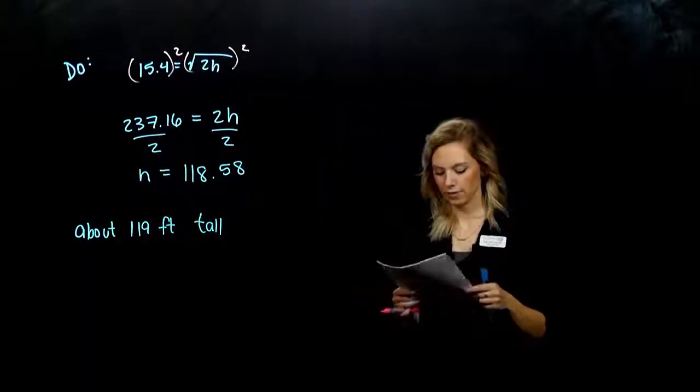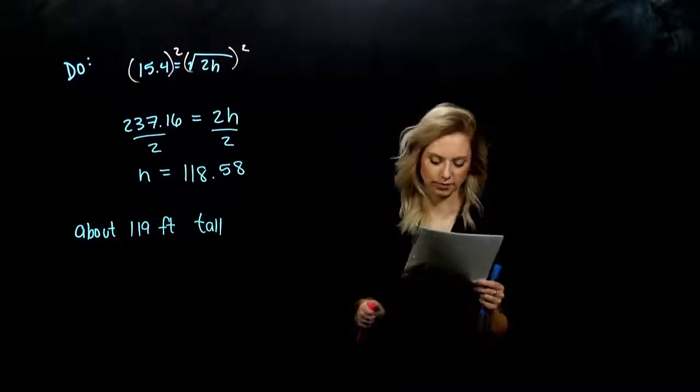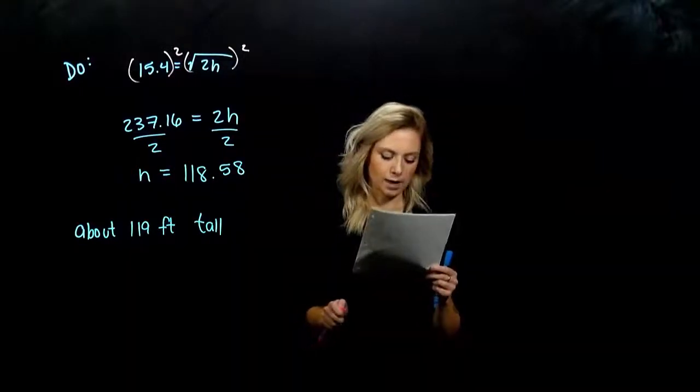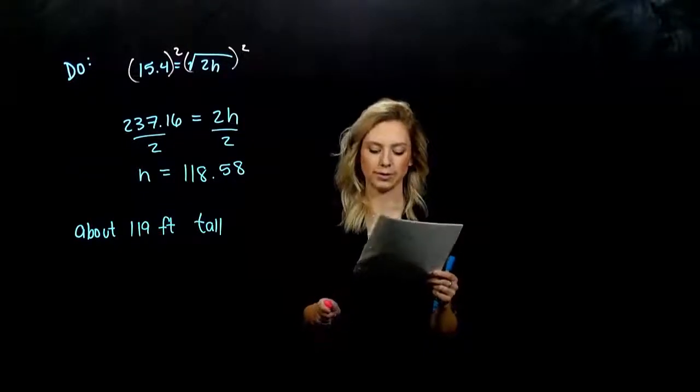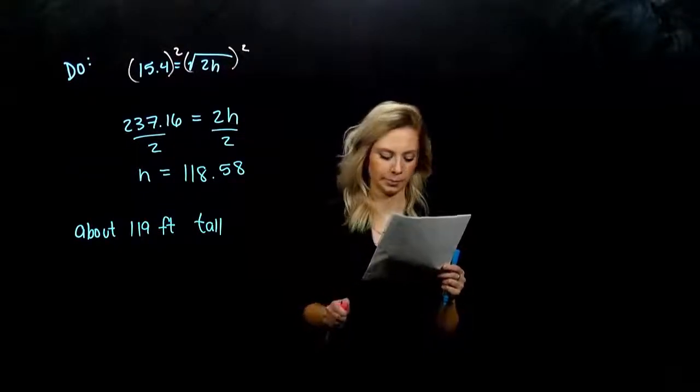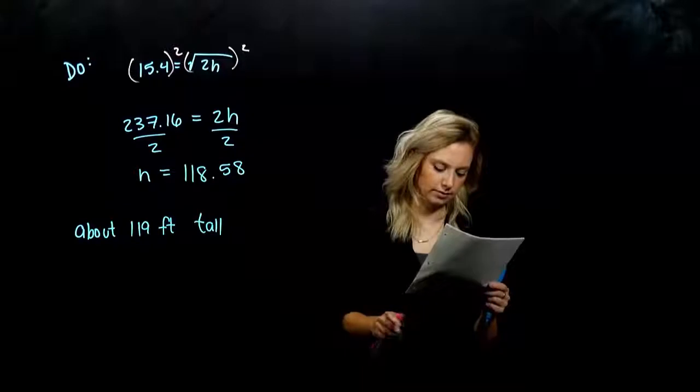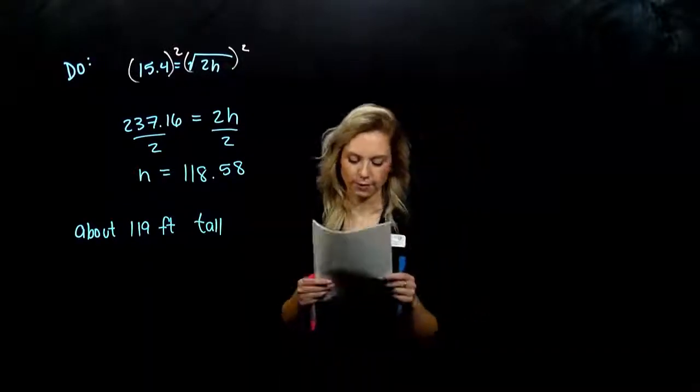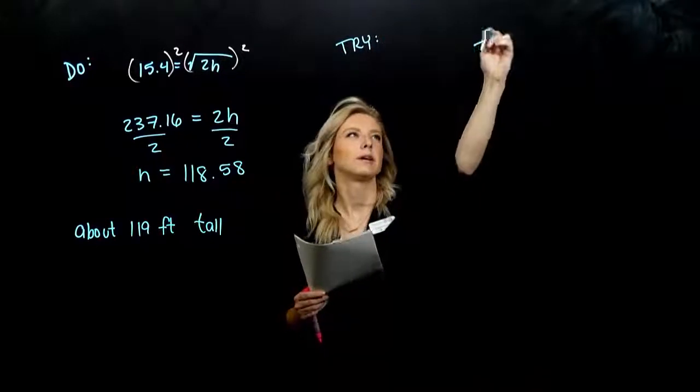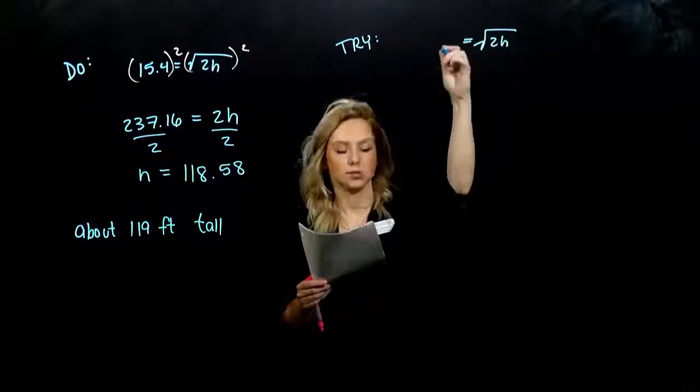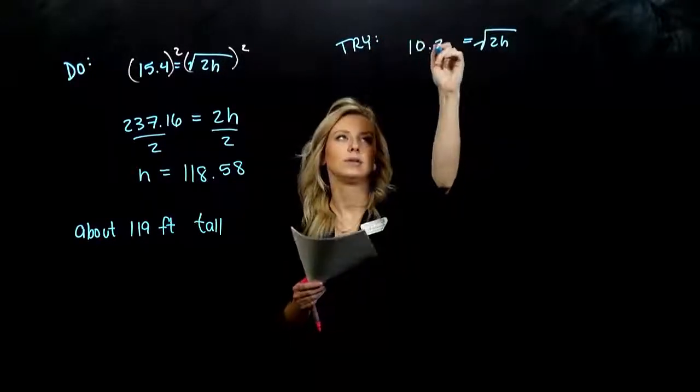And the last one for you. How far above sea level must a sailor climb on the mast of a ship in order to see 10.2 miles out to an iceberg? So again, we have the distance in miles. We're trying to figure out h. So I'm trying to figure out h, and I know that it's equal to 10.2 miles.